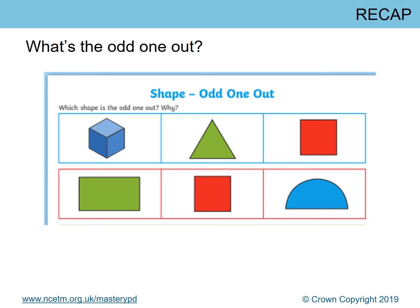You might have also said I think the odd one out is the green triangle, because I can see squares here and squares here. You might have another reason too — as long as you can give a reason, it doesn't really matter. For the red section, you might have said the odd one out is the blue semi-circle because it's the only one with a curved edge, or that the square is the odd one out because it's a regular polygon with equal lengths on each side and equal angles. Whatever reason — it doesn't matter as long as you have a good reason. Well done, now on to today's learning.